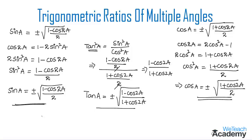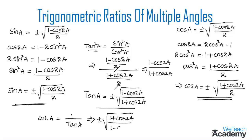Now let us discuss the formula for trigonometric ratio cot. Cot a is nothing but the reciprocal of tan a, so we can write 1 by tan a. That implies we get here plus or minus the reciprocal of the formula for tan a, that is 1 plus cos 2a divided by 1 minus cos 2a. Hence, this is the formula for cot a.